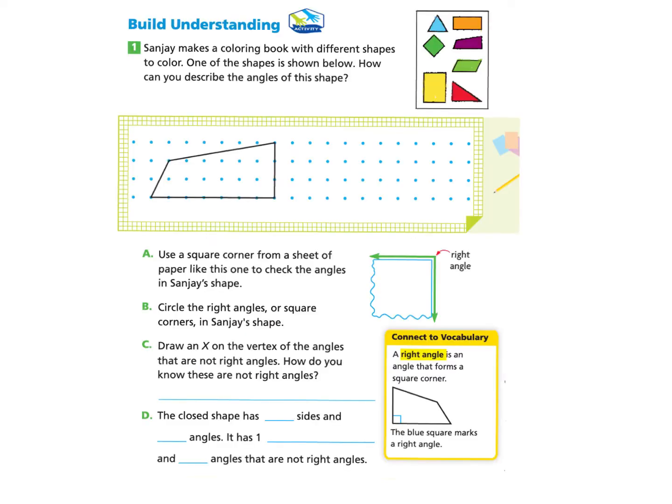Please gather your workbook and a pencil and turn to page 496. We will begin under Build Understanding. Sanjay makes a coloring book with different shapes to color. One of the shapes is shown below. How can you describe the angles of this shape?